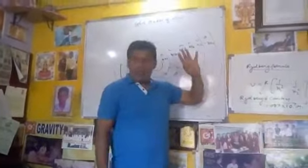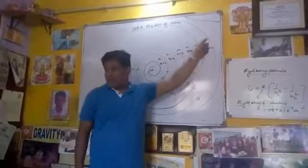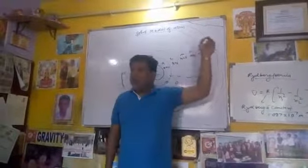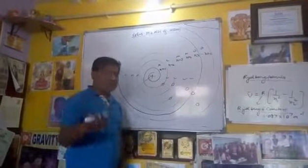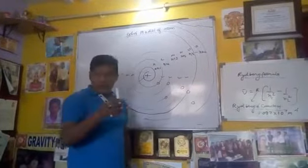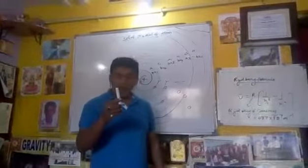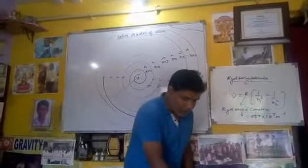Different stationary states - if we consider the Bohr model of an atom, what does it say? It says that the electron is not only rotating but it is also revolving. It is revolving around the nucleus.